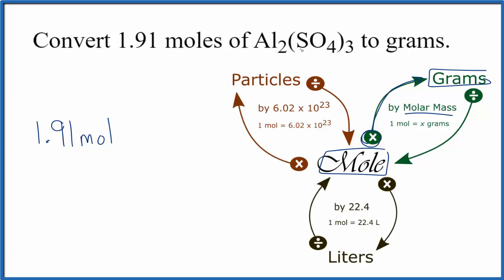To find the molar mass for Al₂(SO₄)₃, we add up the masses from each one of these elements from the periodic table. If you need help with that, there's a link in the description of this video on how to find the molar mass for this aluminum sulfate.